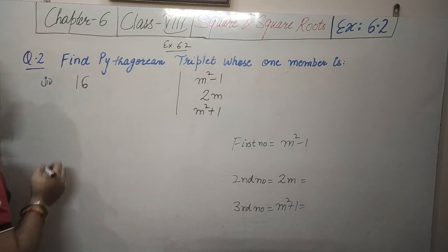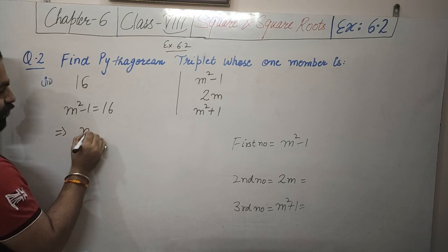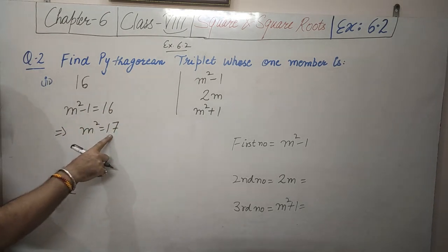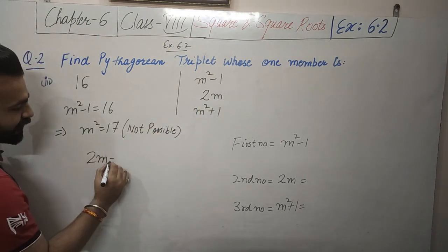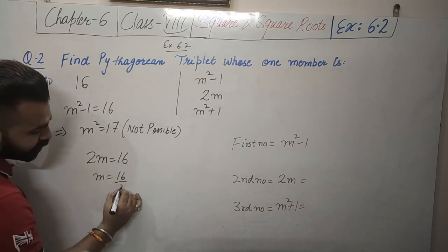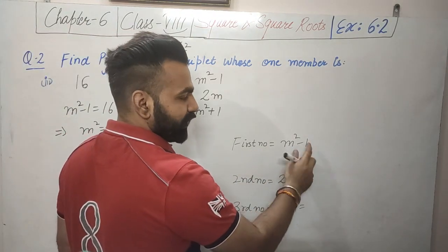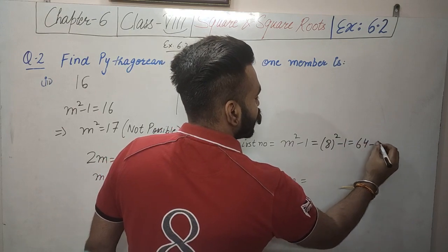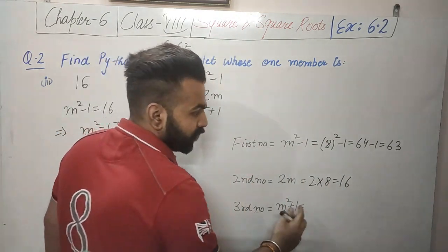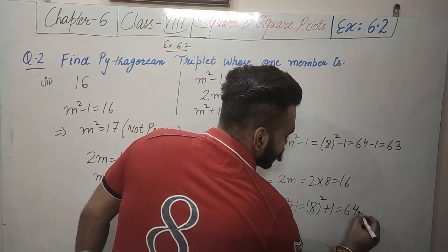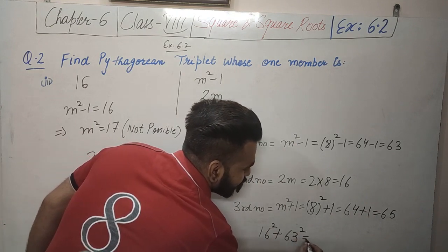Third part: member is 16. If M squared minus 1 equals 16, then M squared equals 17, but 17 is not a perfect square. If 2M equals 16, then M equals 8. So: M squared minus 1 equals 64 minus 1 equals 63; 2M equals 16; M squared plus 1 equals 64 plus 1 equals 65. So 16 squared plus 63 squared equals 65 squared.